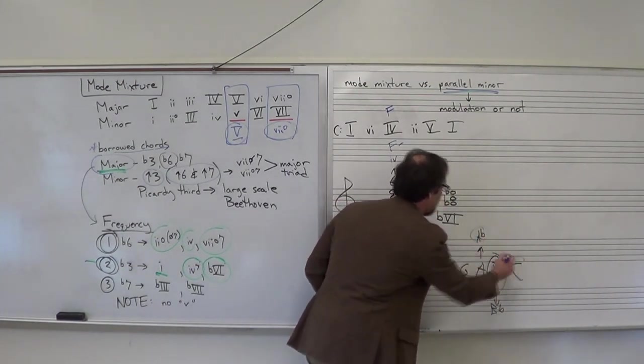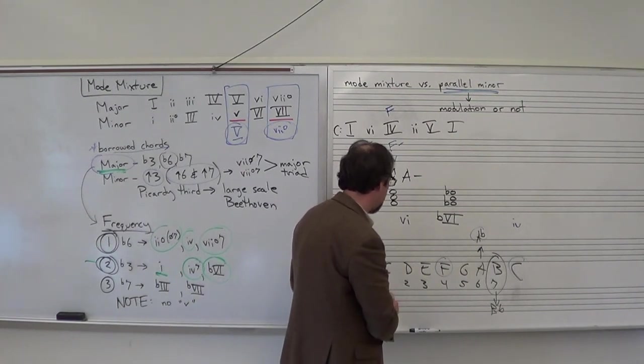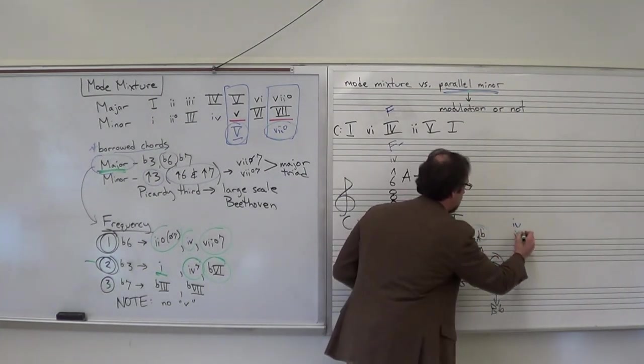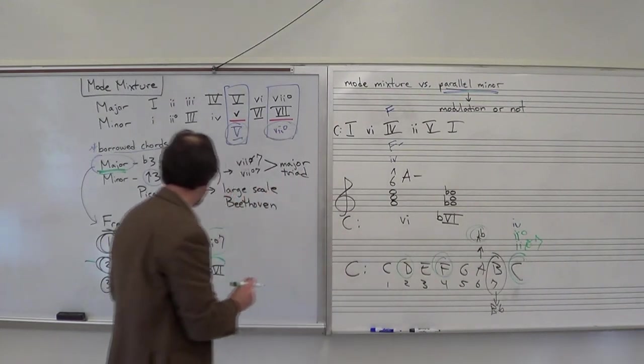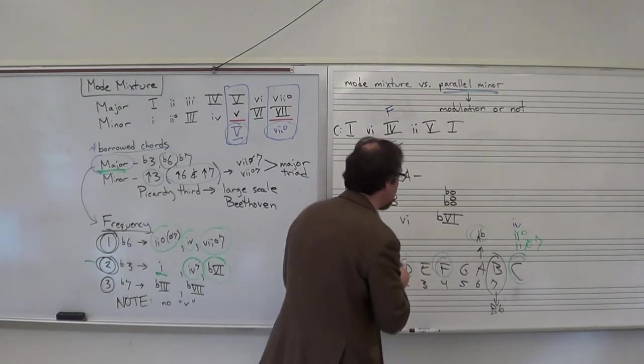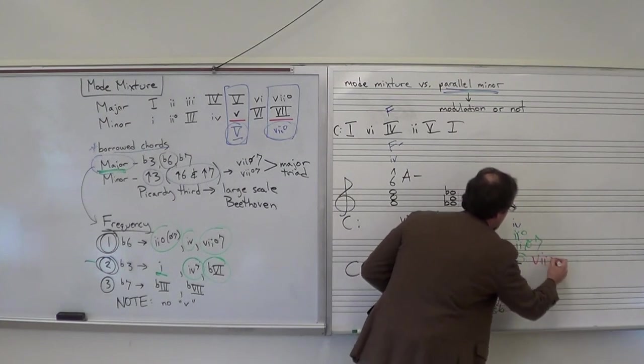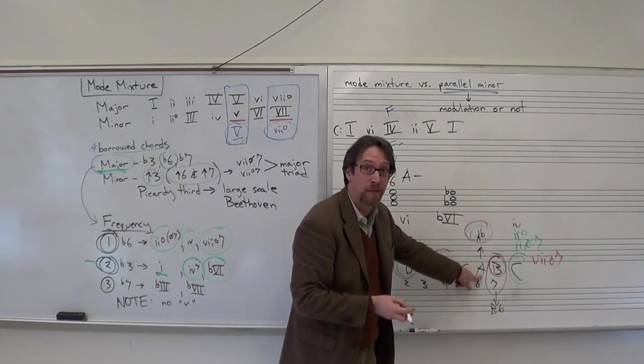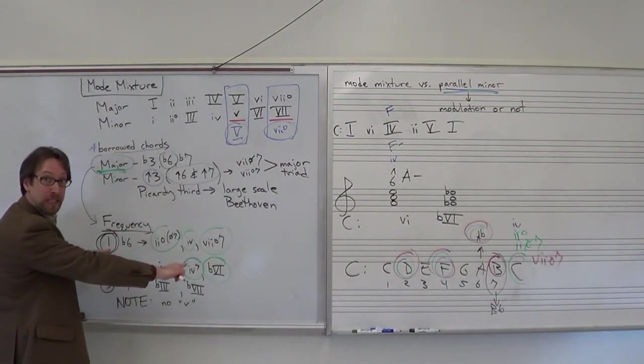So when we do that, just to backtrack and review for a second, when we do that, we could say F, A-flat, C. There's our minor four chord, right? That would be our minor four chord. Or we could say D, F, A-flat. That would be our two diminished triad. Or we could put the C in there and make it a two half diminished seven. And it also would make our seven diminished seven. So if we went B, D, F, A-flat, that would be our seven diminished seven. So just by taking scale degree six and making go from an A in the key of C major to an A-flat, it gives us those other four chords that I just wrote there and that we talked about here as number one frequency when using mode mixture.